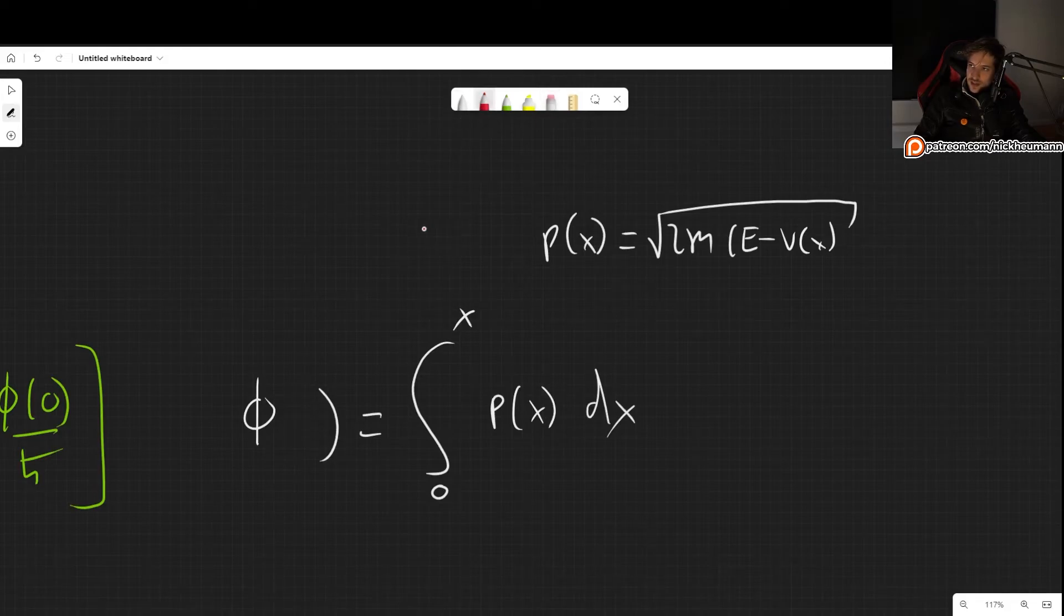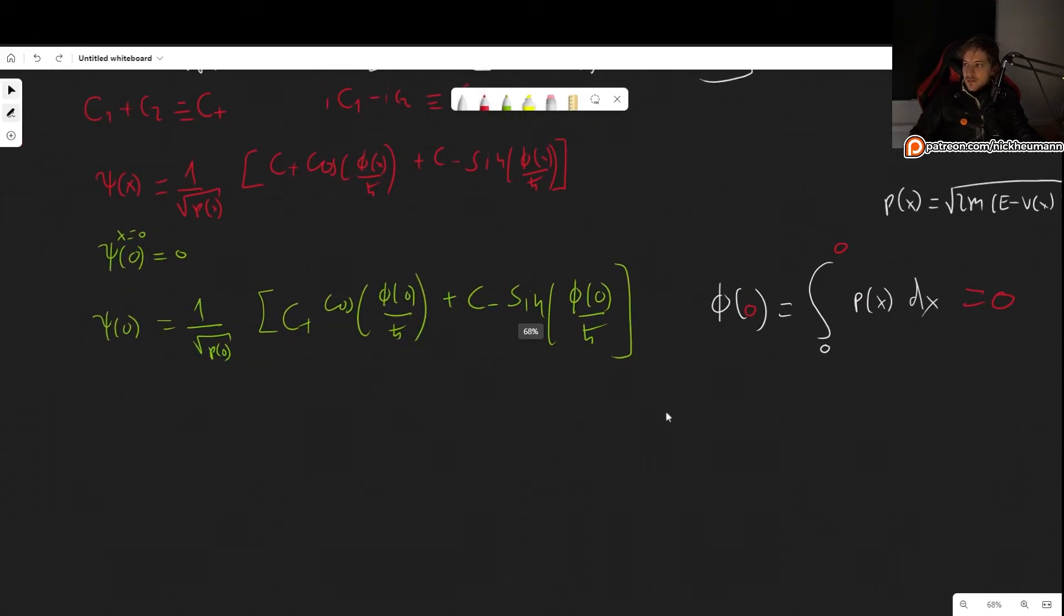So what happens to this integral if x is equal to zero? So basically, what happens in this case? Zero. Then we are integrating from zero to zero. So integrating from zero to zero, we simply get zero. So in this case, of course, the particular momentum didn't really matter much. So that means that phi of zero is zero. So this in here is cosine of zero. And this in here is sine of zero, which, of course, is zero. However, cosine of zero is one. So psi of zero is one over the square root of our momentum evaluated at zero, times c plus. And this has to be equal to zero. So the only reasonable way to achieve this is to say that c plus has to be equal to zero.